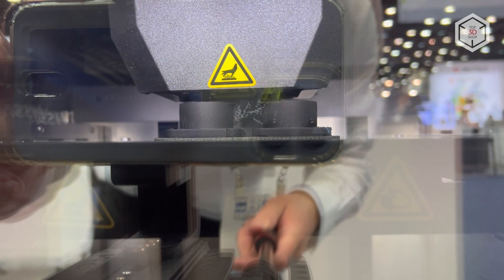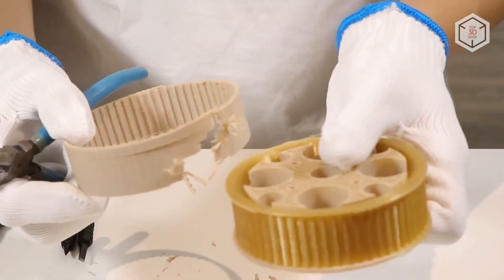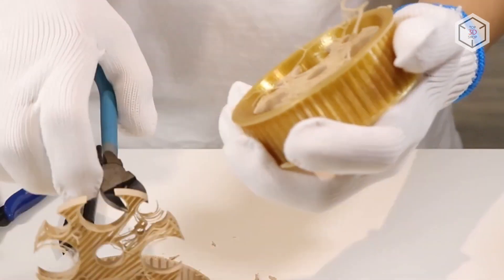The extruder of the Funmat Pro 410 is equipped with two nozzles. The machine is ready to print with two high temperature plastics simultaneously. For example, Peek and a support material specially designed for it by Entamsys engineers.